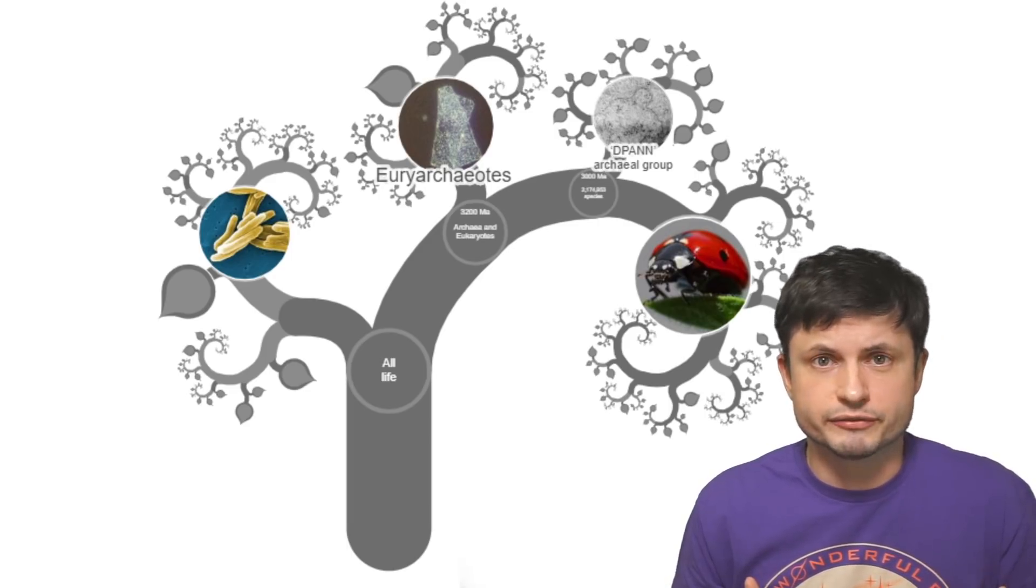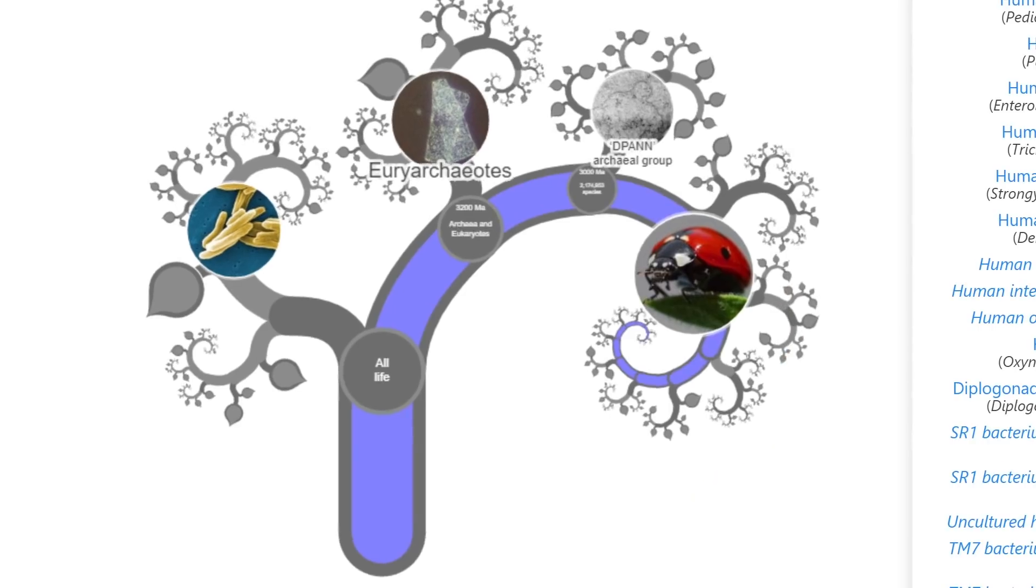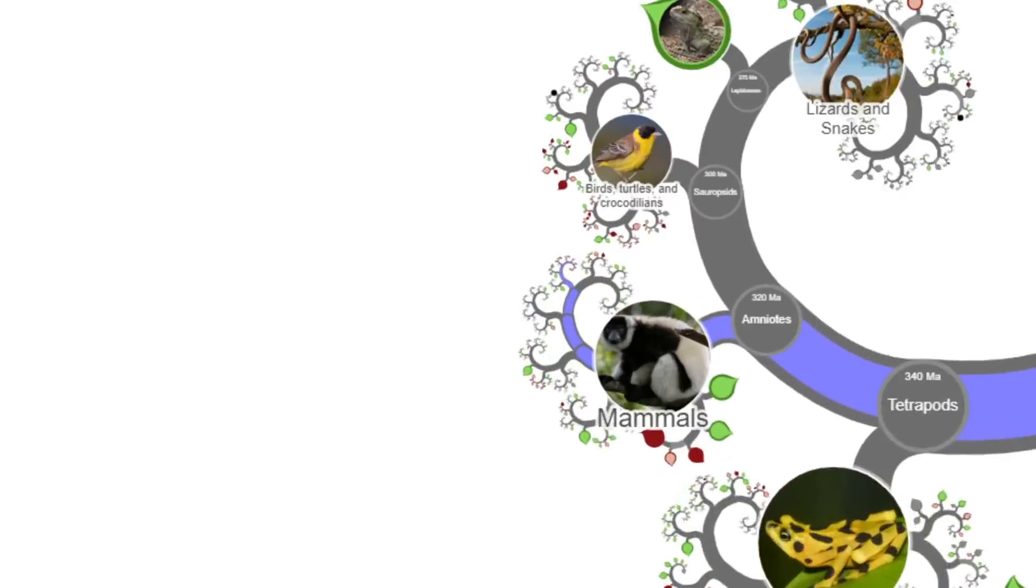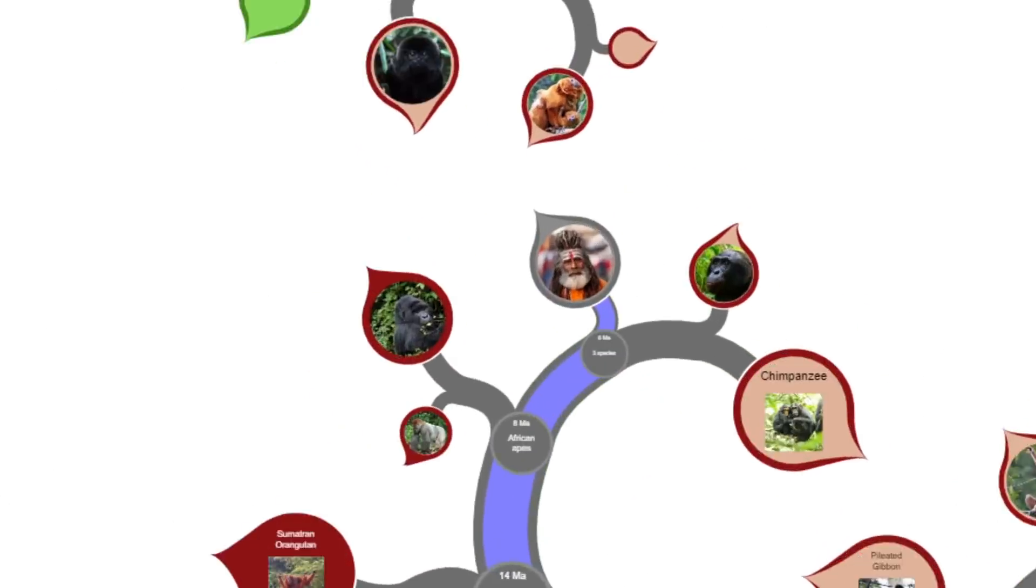This here shows us roughly around 2.2 million species on planet earth in essentially a single simulation or a single fractal. For example, let's find ourselves, let's find humans. And so here we're going to be jumping through the entire tree of life looking for us.